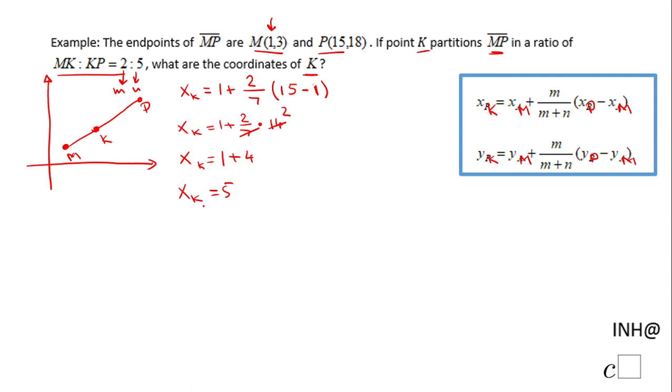Similarly, we're going to do the y-coordinate of point K. We're going to replace in the second formula, this one. So we're going to have the given value—Y sub M is 3—plus the same ratio, 2/7, and then we have 18 minus 3.